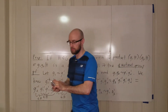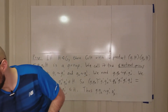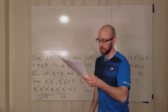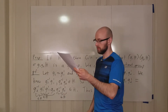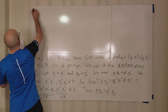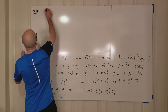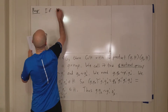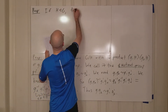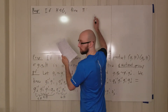So this finishes that part. Now let's do another proposition: if H is normal in G, then the map π — this stands for projection, not 3.14 — goes from G to G mod H.